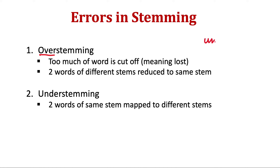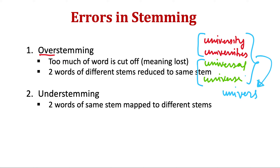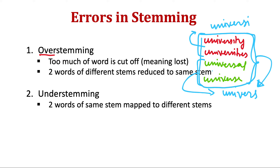For example, take the words 'university', 'universities', 'universal', and 'universe'. The words in red should be grouped together, and the others should form a separate group. But the stemmer may wrongly convert all four to the same stem — say 'universe' — losing meaning. These two should map to one stem and the other two to a different stem, like 'university'. That would be an example of overstemming.